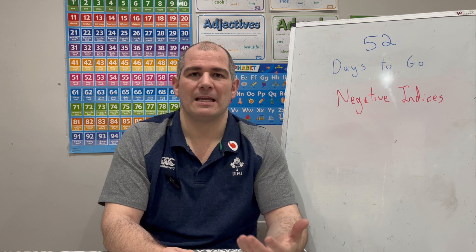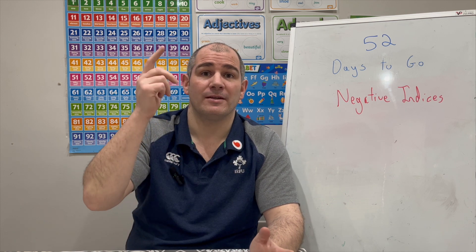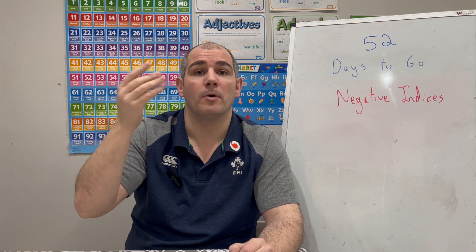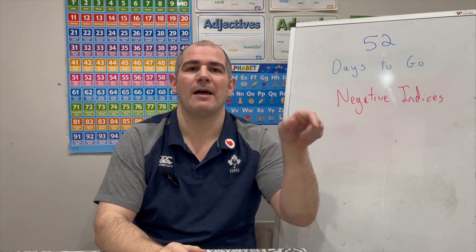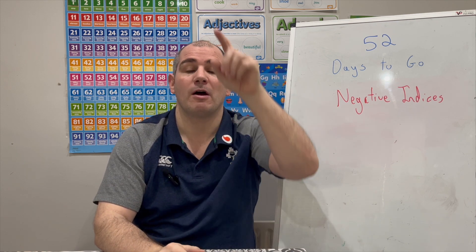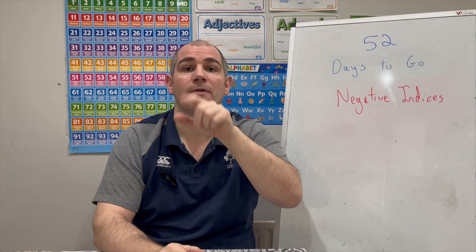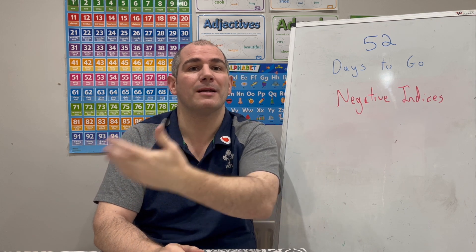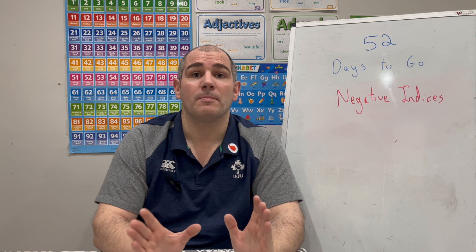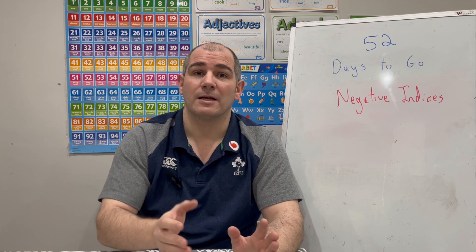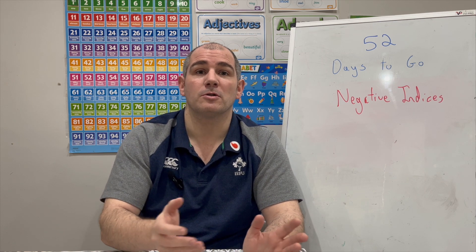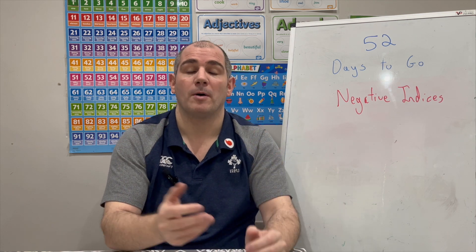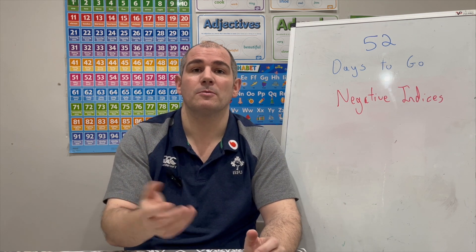So in this video we've looked at negative indices. Whenever you get a negative index or negative power, you write 1 over the positive power. For instance, 5 to the power of negative 2 becomes 1 over 5 squared, and 5 squared is 25, so the answer is 1 over 25. Also remember: if you get a power of 0, any number to the power of 0 — except 0 itself — equals 1. So 10 to the power of 0 is 1, 100 to the power of 0 is 1, and so on.